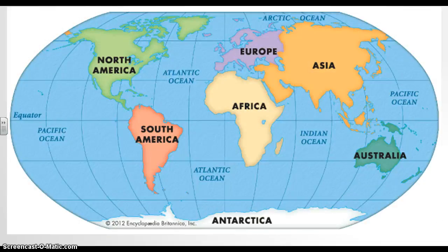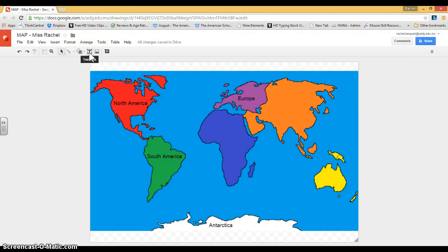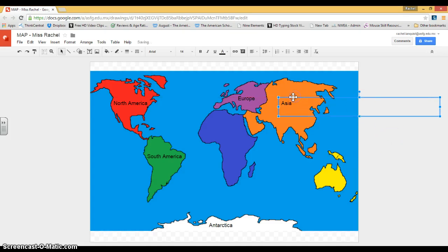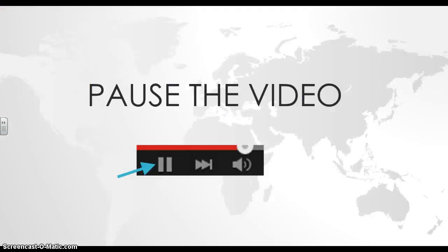The next continent we're going to look at is Asia. I'm going to put Asia right here on this big land mass. I'm going to go over to my map, and I'm going to click the T for text box again. I'm going to click on top of the orange land mass and I'm going to write Asia — capital A. I can put it in the center and click outside. Go ahead and pause the video so that you can add Asia to your map.